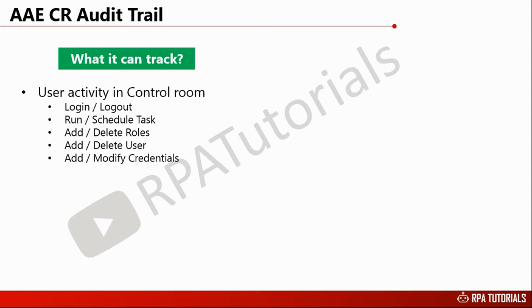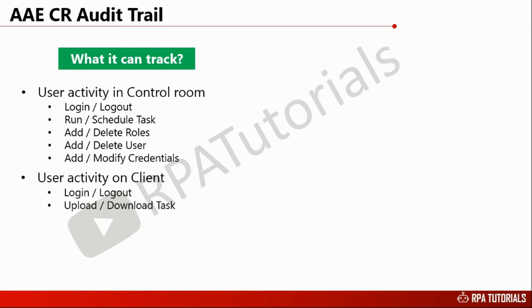On the client machine, its tracking capabilities are limited. It can track logging details of bot creator and bot runner users, and if the bot creator downloads or uploads any task on the server repository. For tasks deployed through the control room, it generates deployment and execution status of the tasks.